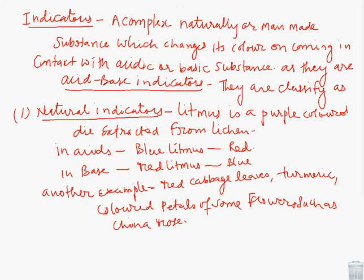Indicators, the first topic of the chapter. A complex, naturally or man-made substance which changes its color on coming in contact with acidic or basic substances. These substances change the color in acid or base solution, and are termed as acid-base indicators. They are classified as natural indicators.